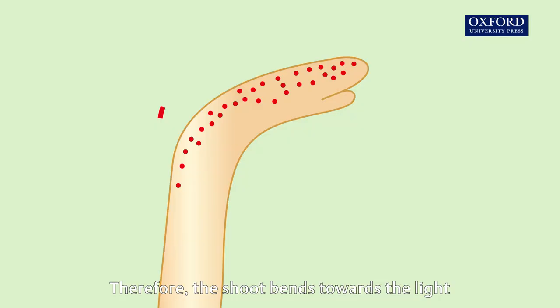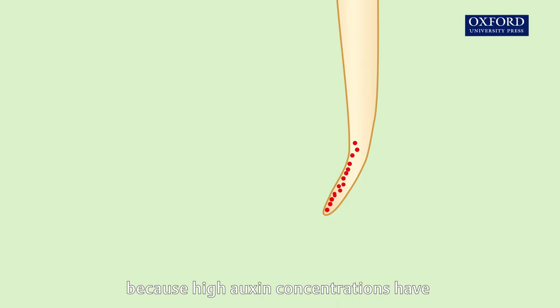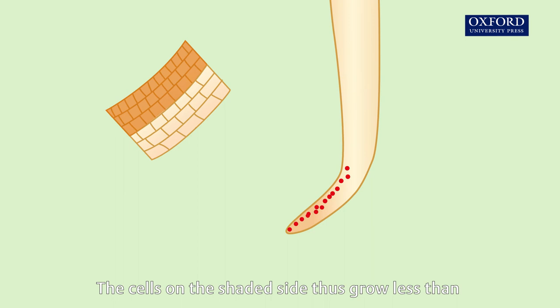Meanwhile, in the root, the high auxin concentration on the shaded side inhibits growth there, because high auxin concentrations have an inhibitory effect on root growth. The cells on the shaded side thus grow less than those on the illuminated side. Therefore, the root bends away from the light.